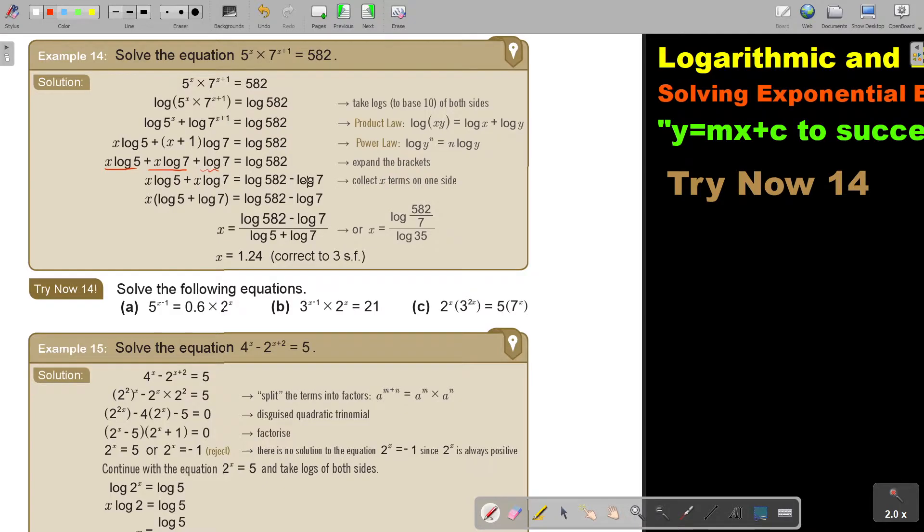So I'm taking that one to the other side. I take x out as a common factor and then I divide by log 5 plus log 7. And then I just press it on my calculator. And I can simplify it to this, but it's not necessary.